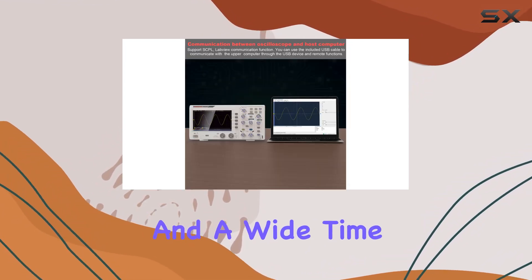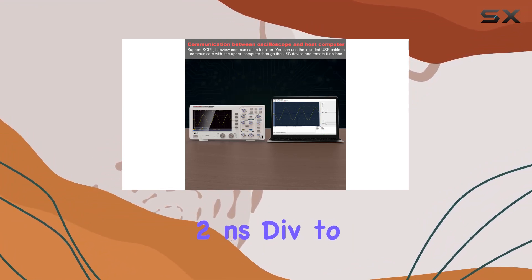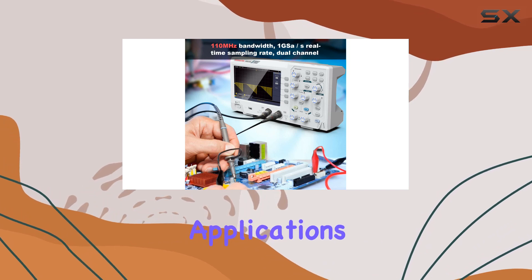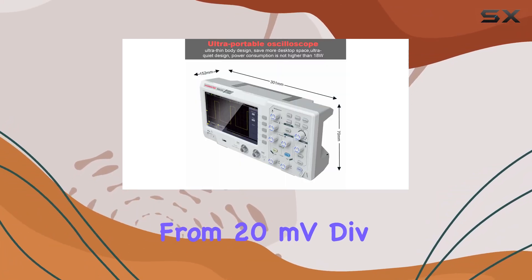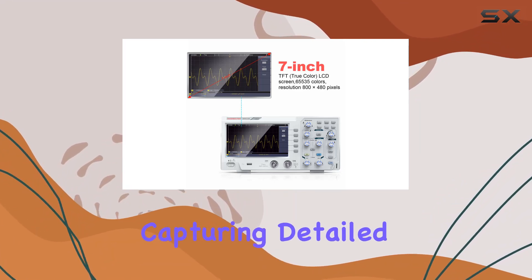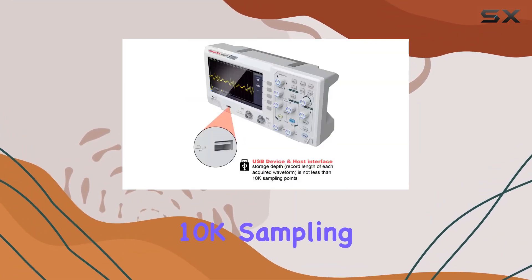Equipped with dual channels and a wide time-base range from 2N-SDIV to 1,000-SDIV, this oscilloscope caters to various applications. The vertical scale ranges from 20MVDIV to 5VDIV, and the storage depth ensures capturing detailed waveforms with not less than 10K sampling points.